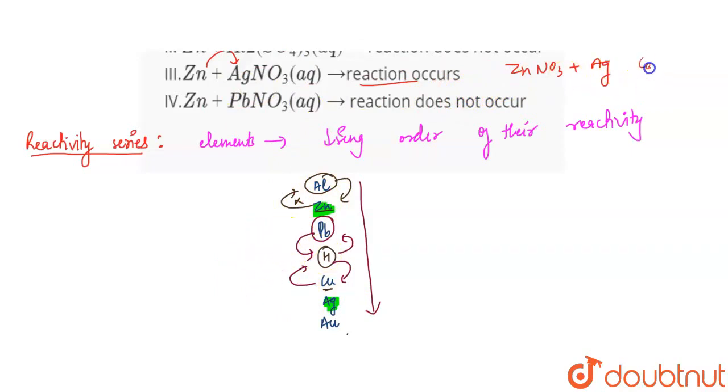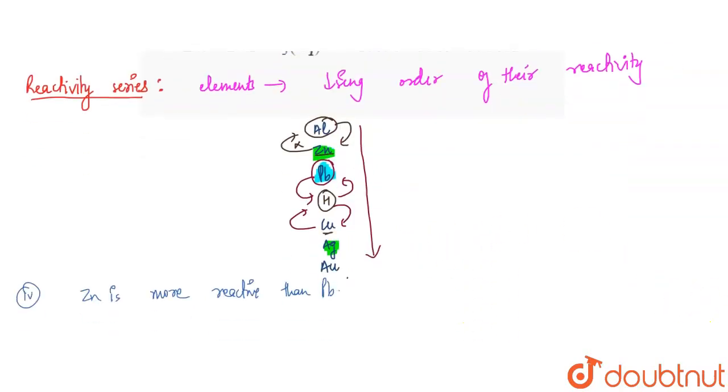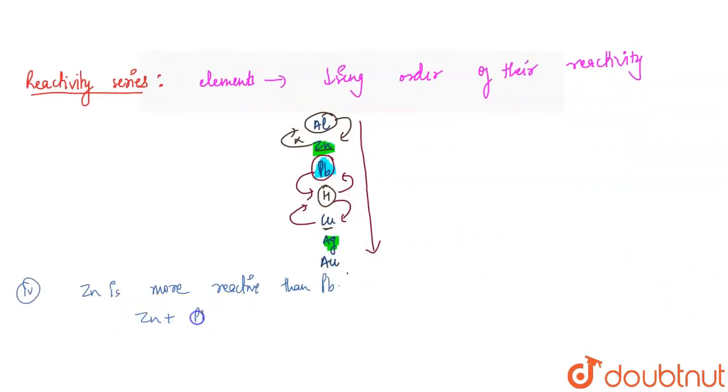Next, we say that when zinc and PbNO3 reaction, the reaction does not occur. Let's see. If we talk about PbNO3, this means that your zinc is more reactive than lead. If it is more reactive than Pb and when you react with PbNO3, it will be Zn(NO3)2 and lead will be displaced. What is this reaction here?